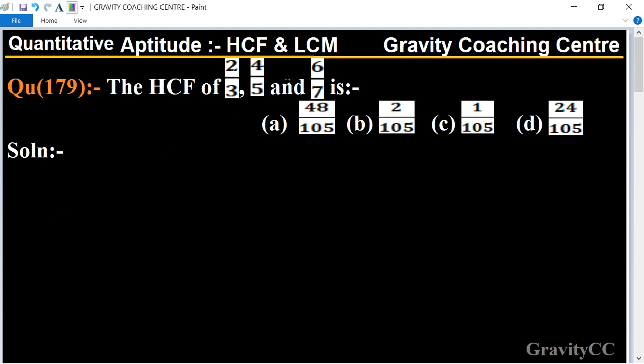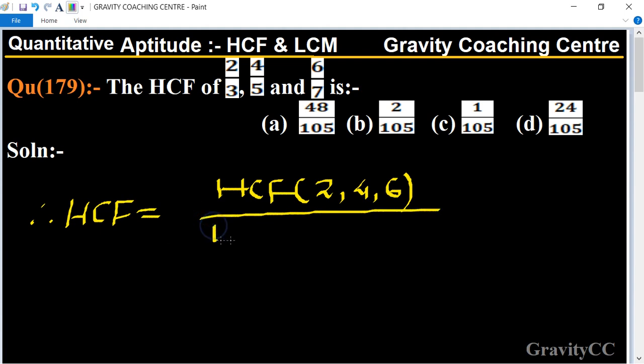First of all we find the HCF of the numerators and the LCM of the denominators. So therefore, required HCF equal to HCF of the numbers 2 comma 4 comma 6 upon LCM of...